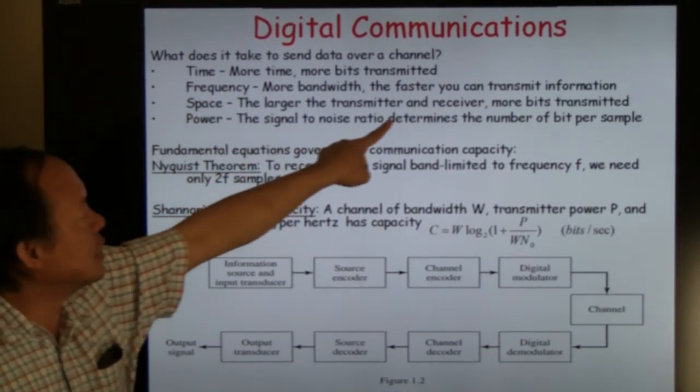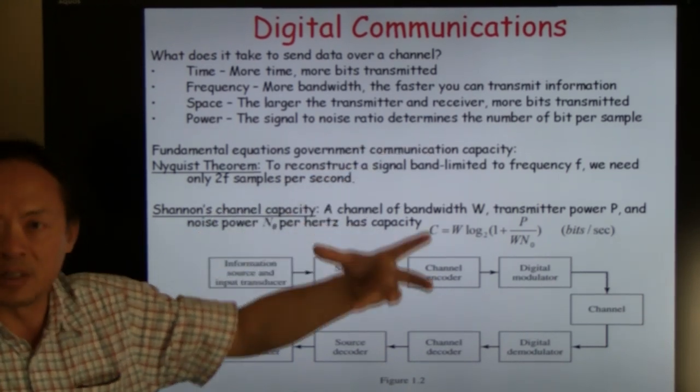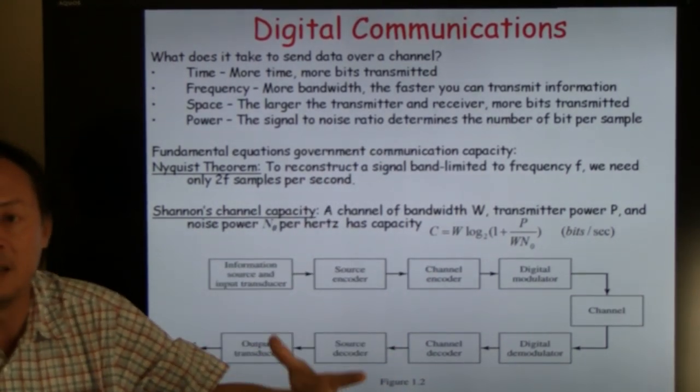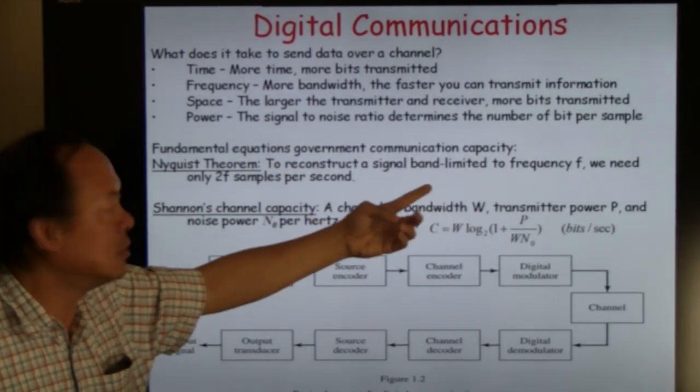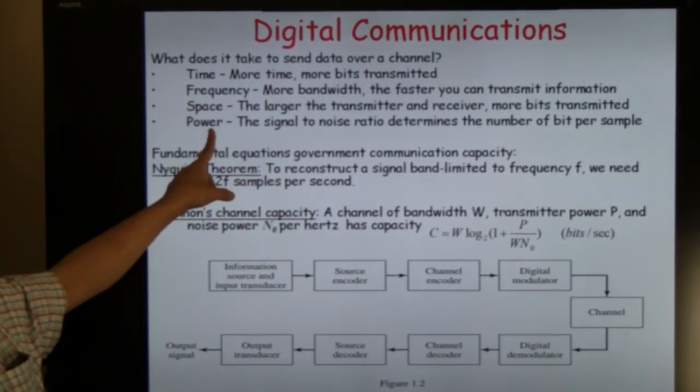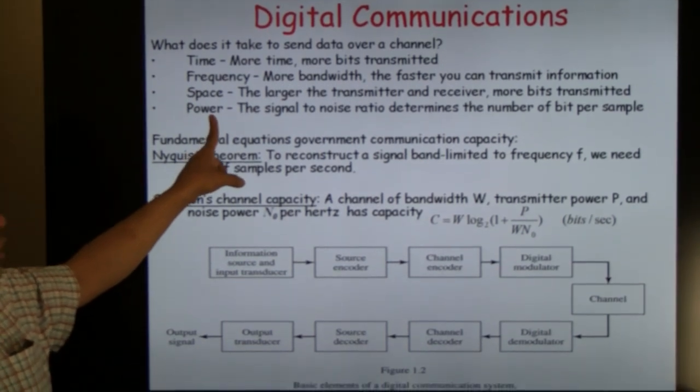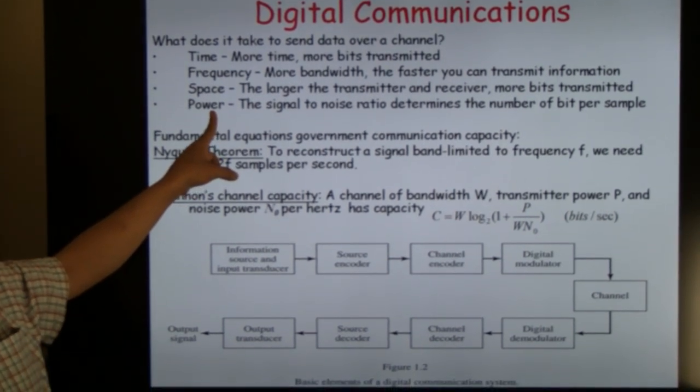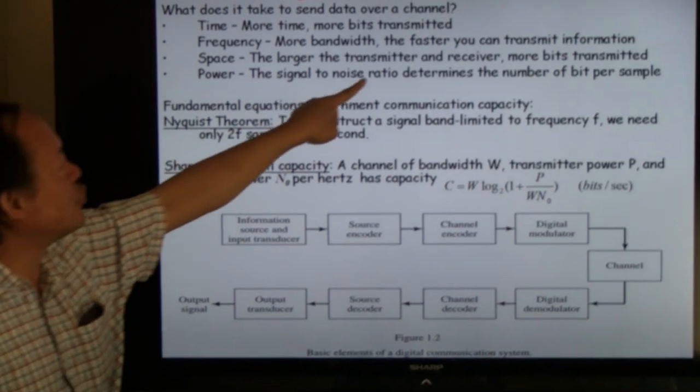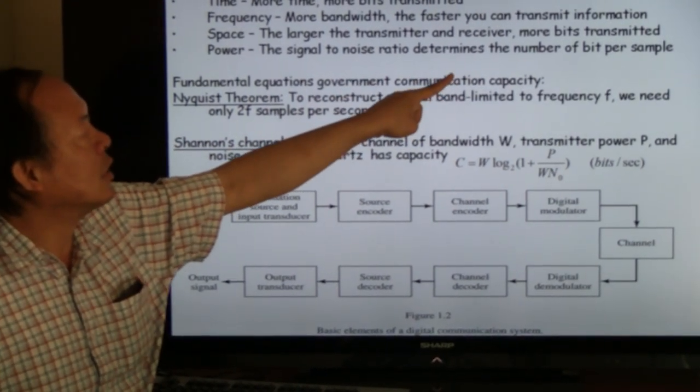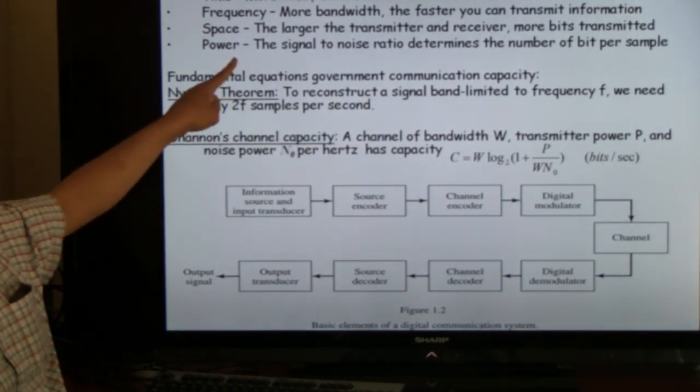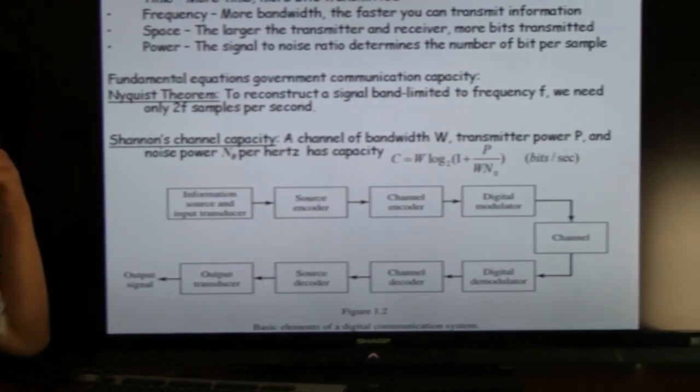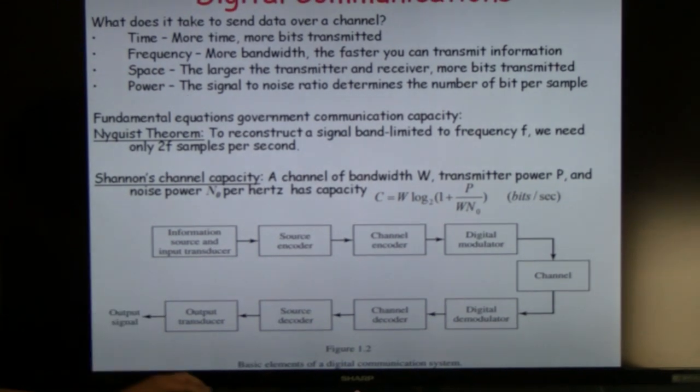Also in space, the larger the transmitter and receiver—for example, your dish is bigger or you have multiple transmitter antennas or receiver antennas—then you can send more information. And power: the more power you have, the more information you can send. And not only that, the signal-to-noise ratio determines not only the number of bits per sample you can send or receive, but also the fidelity of the signal you have on the receive end.